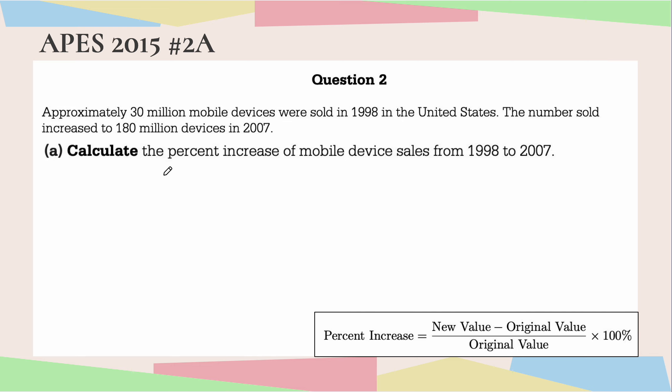The formula tells us that we have to do the new value, which is 180 million, minus the original value, which is 30 million. I'm using capital M for million. Then we divide that by the original value of 30 million and multiply by 100%. So 180 million minus 30 million is 150 million.